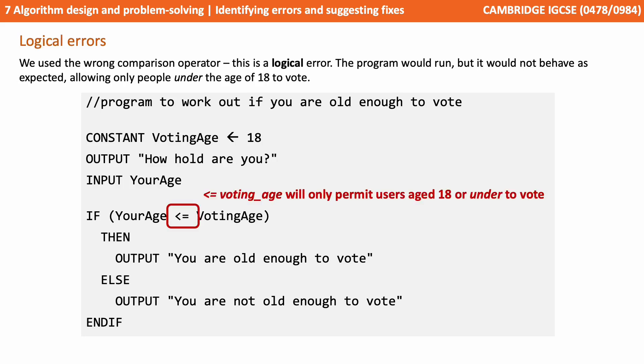We used the wrong comparison operator. This is a logical error. The program as it currently stands would run, but it would not behave as expected because it actually only allows people under the age of 18 to vote — and that's clearly not what this program is designed to do. We simply need to change that less than symbol to a greater than symbol to get the program to behave as expected.